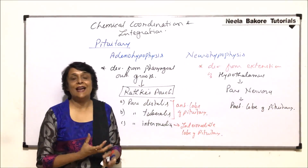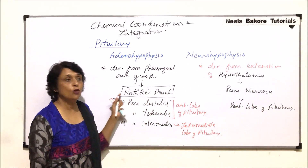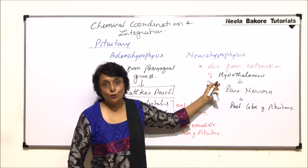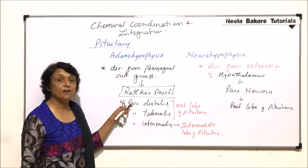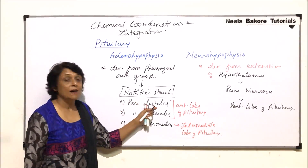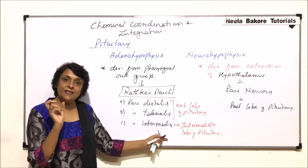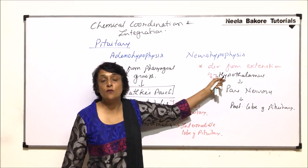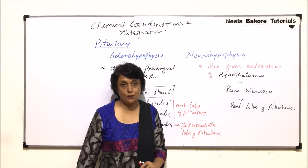To summarize: the pituitary gland has two main origins. The anterior lobe comes from the pharyngeal outgrowth, known as Rathke's pouch, which has three parts — pars distalis and pars tuberalis form the anterior lobe, pars intermedia makes the intermediate lobe. Pars nervosa, formed by the extension of the hypothalamus, gives rise to the posterior lobe of the pituitary.